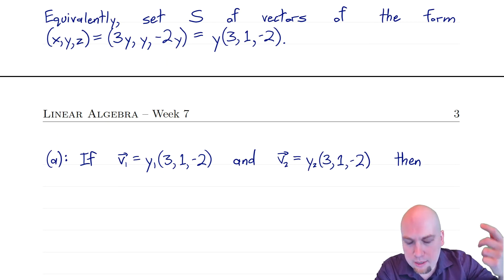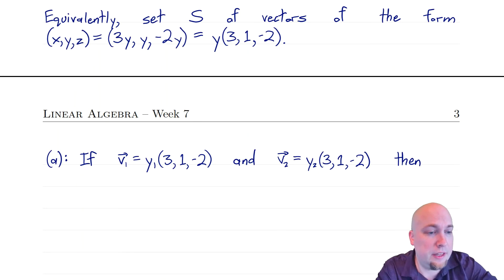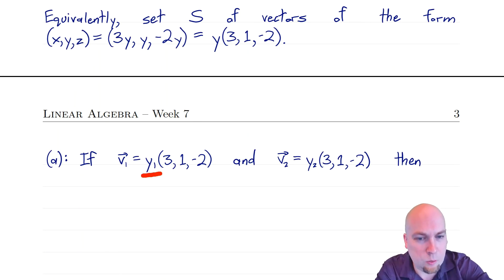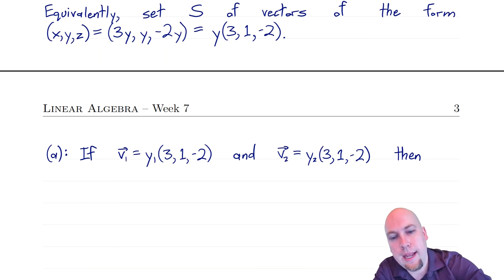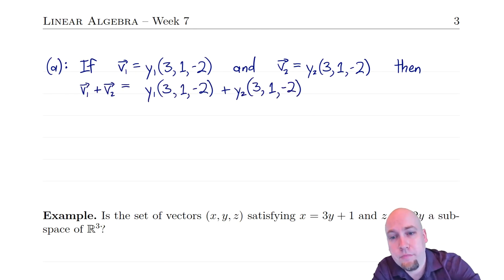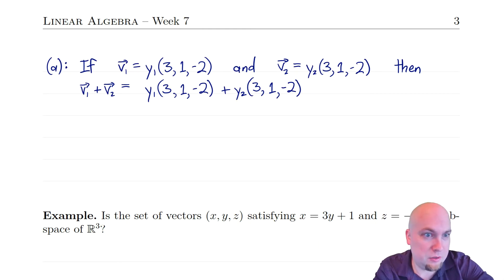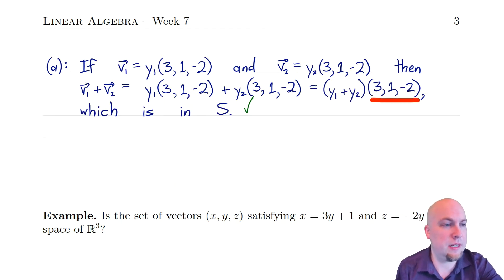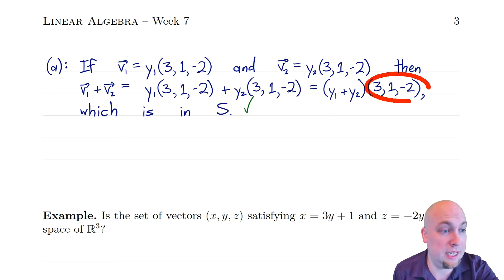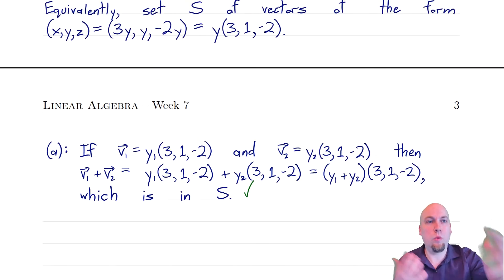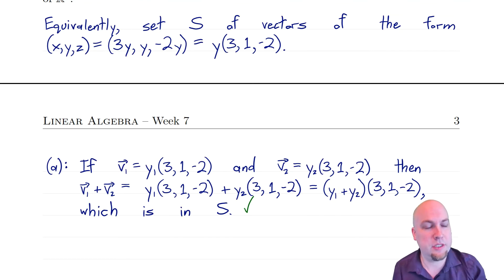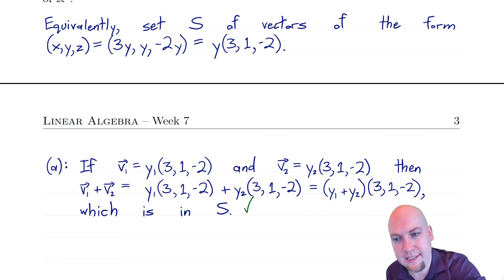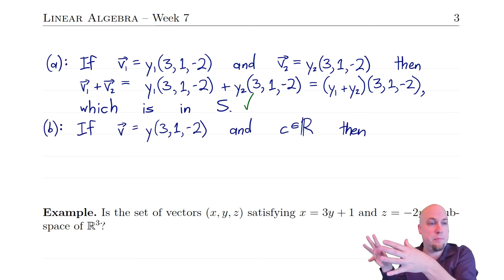Let's check property A: pick two vectors in S, namely y₁·(3, 1, −2) and y₂·(3, 1, −2), and add them up. We get y₁·(3, 1, −2) + y₂·(3, 1, −2) = (y₁ + y₂)·(3, 1, −2). That's just some number times (3, 1, −2), so it's still in S. It doesn't matter what that number is — we can write it as a scalar times (3, 1, −2), so it's in the set.